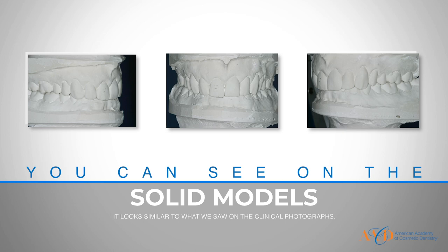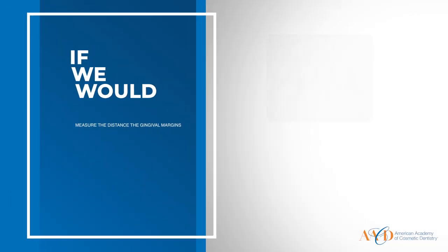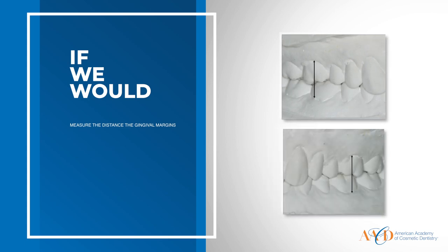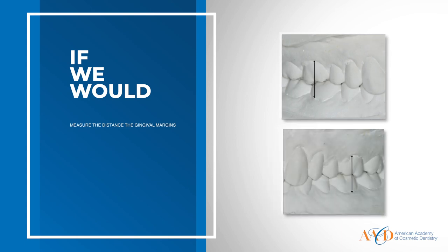There's a 100% overlap of the maxillary anteriors over the lower anteriors. And again, pay attention to the posterior segment — there's very little wear on those posterior buccal cusps. If we measure the distance between the gingival margins on the posteriors, it's within a normal range for what we'd expect for vertical dimension.